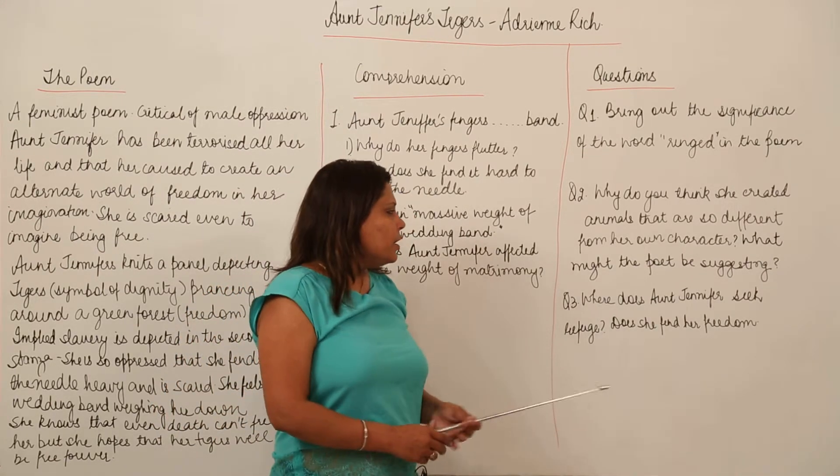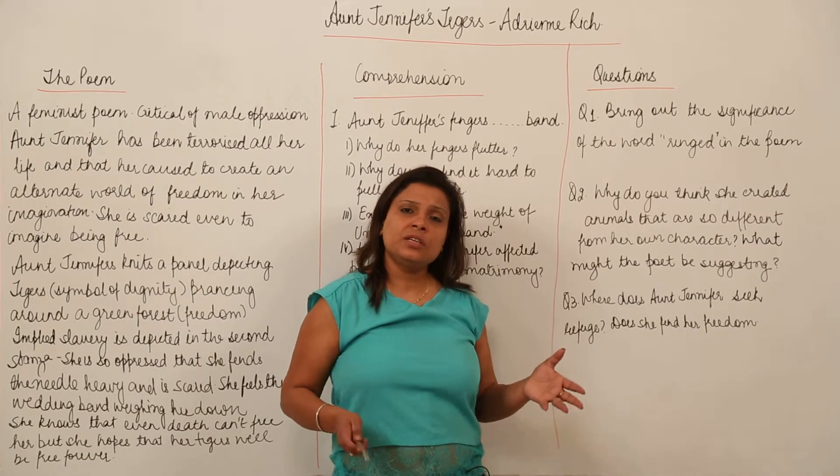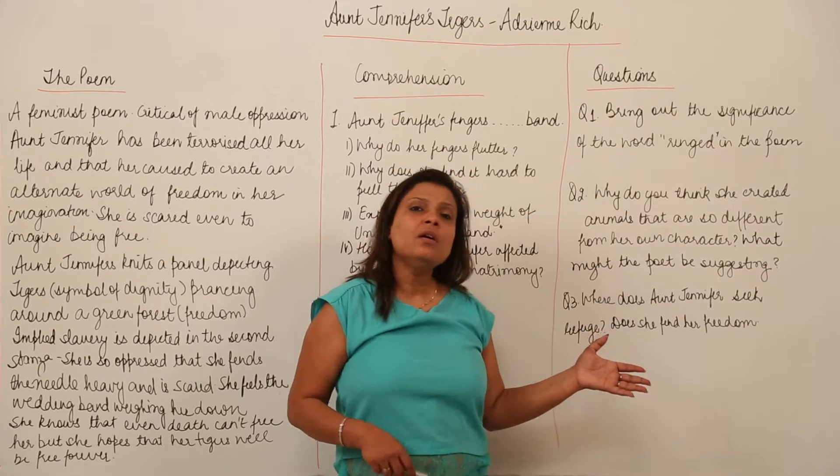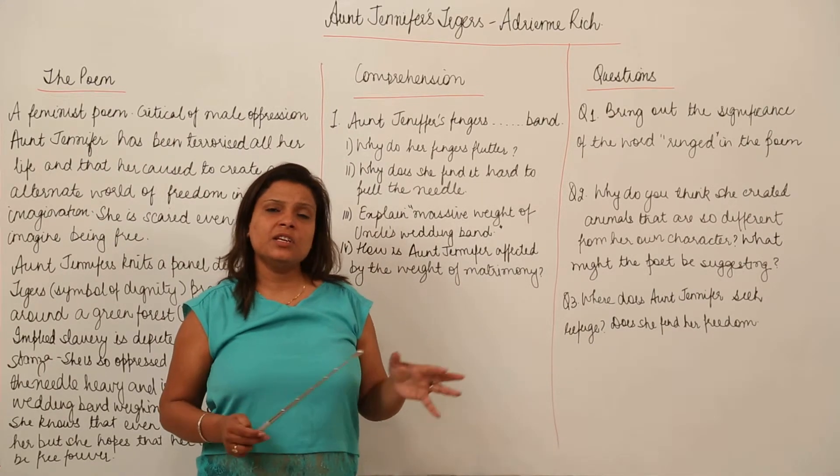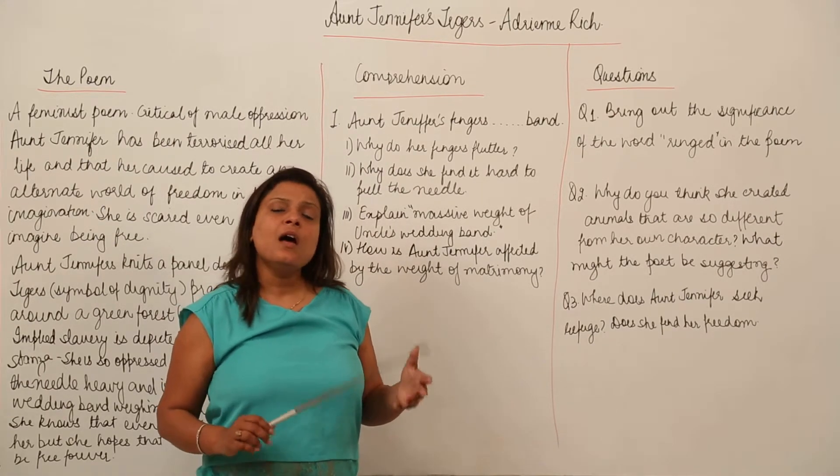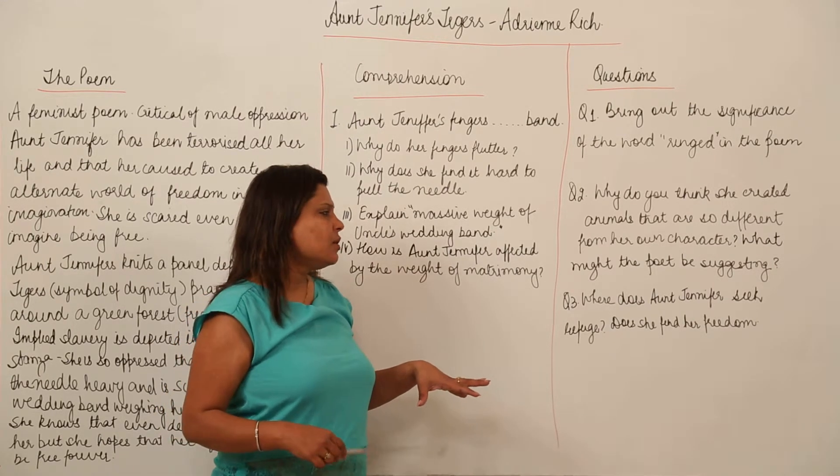Now where does Aunt Jennifer seek refuge? Obviously she seeks refuge in her tapestry, in her imagination, in her world of imagination where nobody else can understand what she is going through and she wants to escape this freedom.